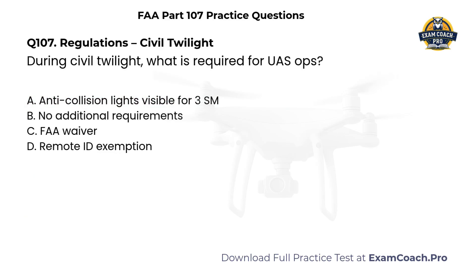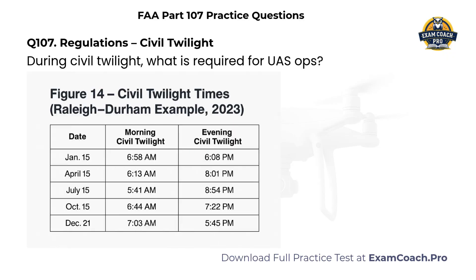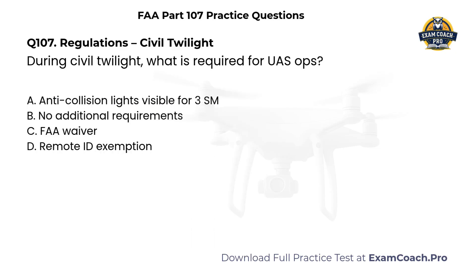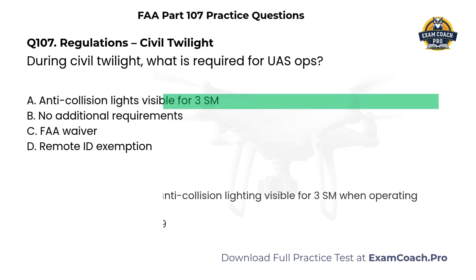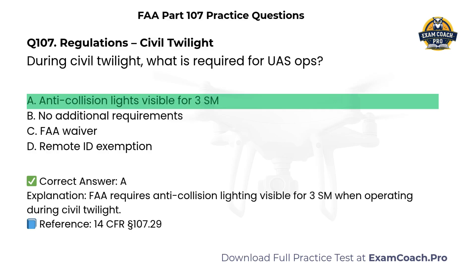Regulations. Civil Twilight. Refer to Figure 14, Civil Twilight Chart for Raleigh, North Carolina. During Civil Twilight, what is required for UAS operations? A. Anti-collision lights visible for 3 statute miles. B. No additional requirements. C. FAA waiver. D. Remote ID exemption. Correct answer: A. FAA requires anti-collision lighting visible for 3 statute miles when operating during Civil Twilight.